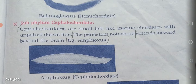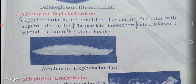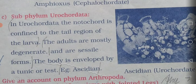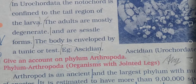Sub-phylum cephalochordata: it is a small fish-like marine chordate with unpaired fins. The persistent notochord extends forward beyond the brain. Example: Amphioxus. Sub-phylum urochordata: the notochord is confined to the tail region of the larva. The adults are mostly degenerate and sessile (attached) forms. The body is enveloped by a tunic or test. Example: Ascidia.